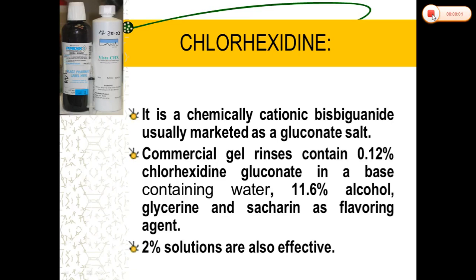Coming to Chlorhexidine, it is the most potent of the tested bisbiguanides. It has a strong base and is more stable in the form of its salts — Chlorhexidine Gluconate — and it shows optimal antimicrobial action between pH 5.5 and 7. For intercanal irrigation, 2% concentration is most commonly used and is also most effective.